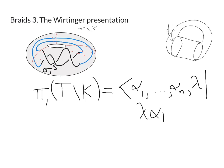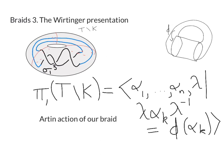λ αₖ λ⁻¹, this is supposed to be φ of αₖ, whatever this monodromy map phi was. And I was claiming that this map phi is exactly the Artin action of our braid. And we've just found out how to compute Artin actions in the previous video. So this gives us a way of finding the fundamental group of T minus K.